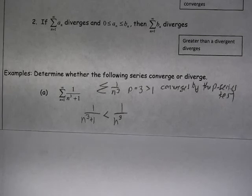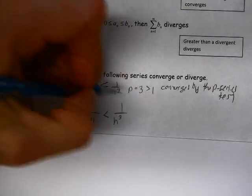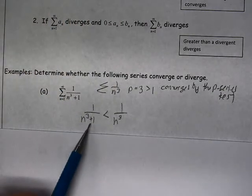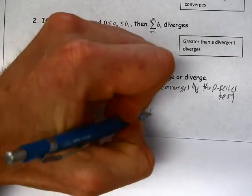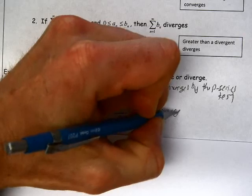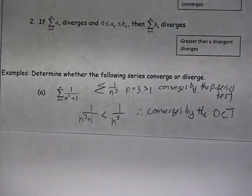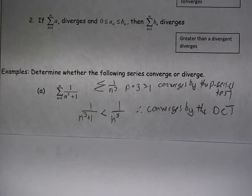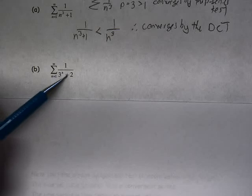So that's the Direct Comparison Test working in my favor. Since the series 1 over n cubed converges and the series we're looking at is less than that convergent series, we know our series 1 over (n cubed plus 1) converges by the Direct Comparison Test. Let's take a look at another example: 1 over (3 to the n plus 2).